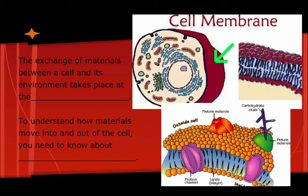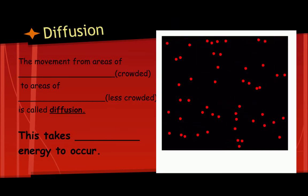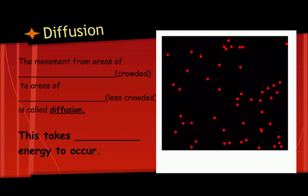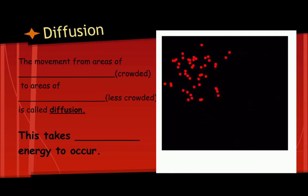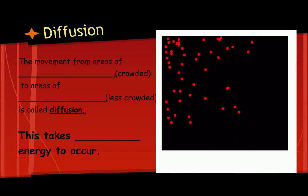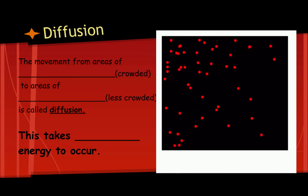The exchange of materials between a cell and its environment takes place at the cell membrane. To understand how materials move into and out of the cell, we need to understand our first form of transportation, which is diffusion. Diffusion is the movement from areas of high concentration to areas of low concentration.